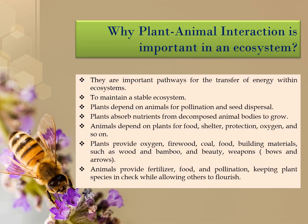Why is plant-animal interaction important in an ecosystem? They are important pathways for the transfer of energy within an ecosystem. To maintain a stable ecosystem, plants depend on animals for pollination and seed dispersal. Plants also absorb nutrients from decomposed animal bodies to grow. Animals depend on plants for food, shelter, protection, and oxygen.